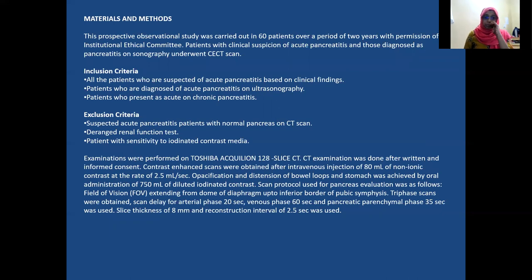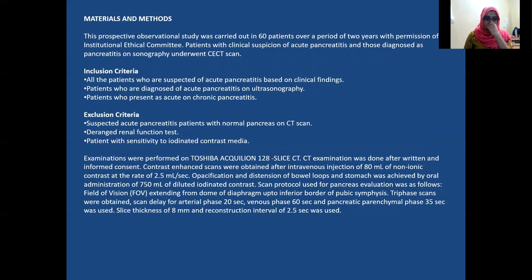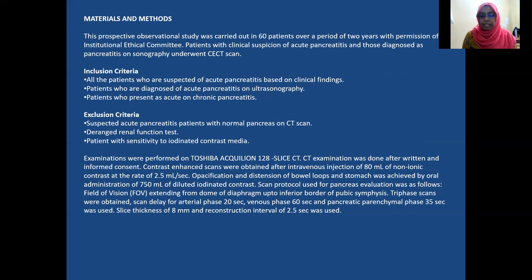The materials and methods: this is a prospective observational study carried out on 60 patients over a period of two years. All patients suspected of having acute pancreatitis on clinical findings as well as on ultrasonography, and patients presenting with acute-on-chronic pancreatitis, were included. Exclusion criteria were deranged renal function tests, sensitivity to iodinated contrast media, and suspected acute pancreatitis patients with a normal pancreas on CT scan. Examinations were performed on a 128-slice CT scanner with IV non-ionic contrast medium. Triple-phase scans were obtained: arterial phase at 20 seconds, pancreatic parenchymal phase at 35 seconds, and venous phase at 60 seconds.